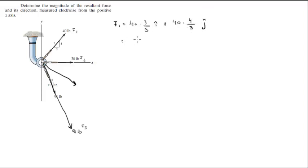Now, when you solve this, you're going to get that this is 24i plus 32j.